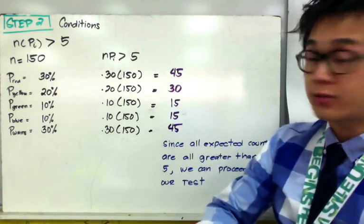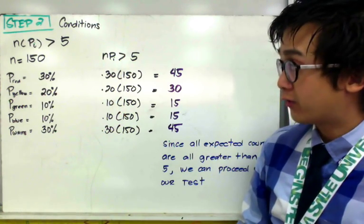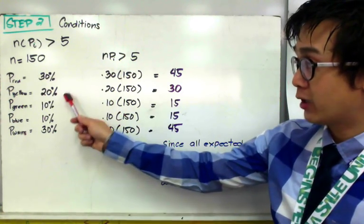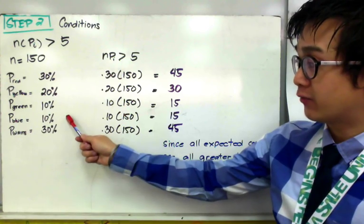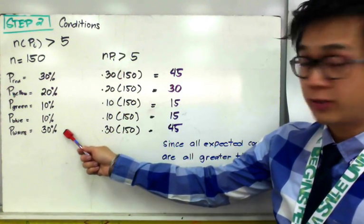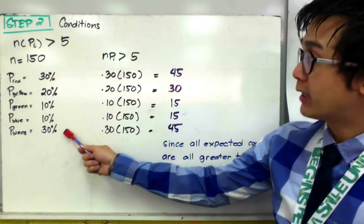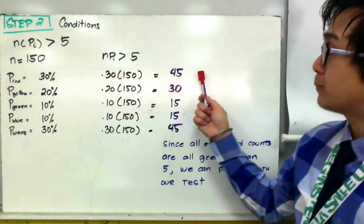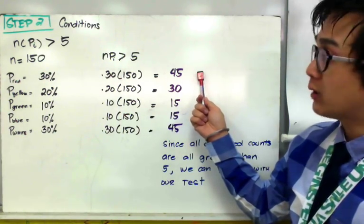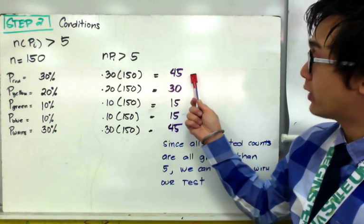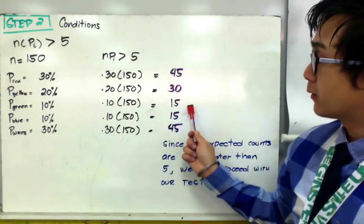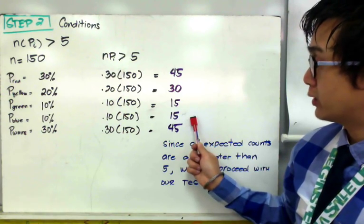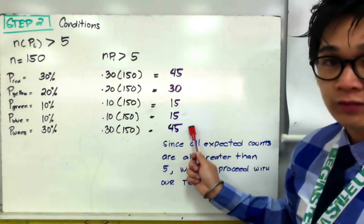So for this problem, 30% prefer red car from last year, 20% for yellow, 10% for green, 10% for blue, and 30% for white. Multiply it by the sample size of 150, and we will get the expected count for each proportion. So for red, it's 45, for yellow, it's 30, green is 15, blue is 15, white is 45.